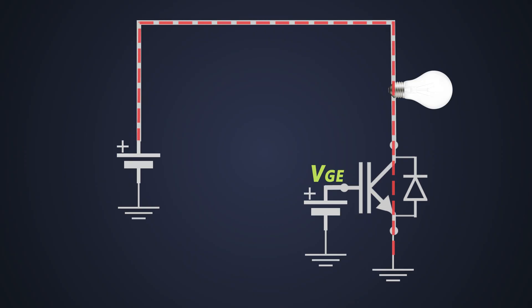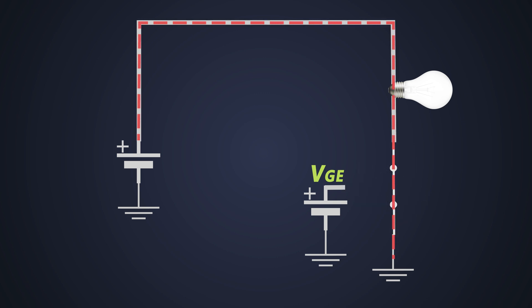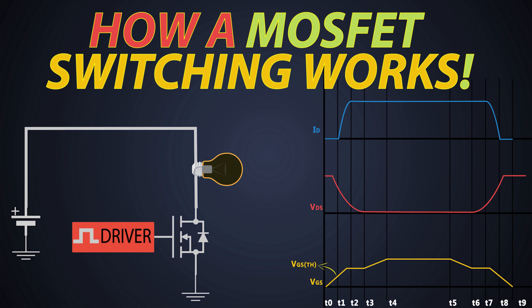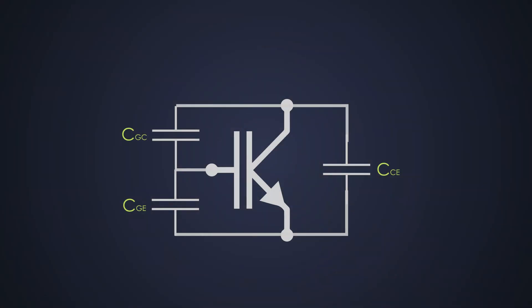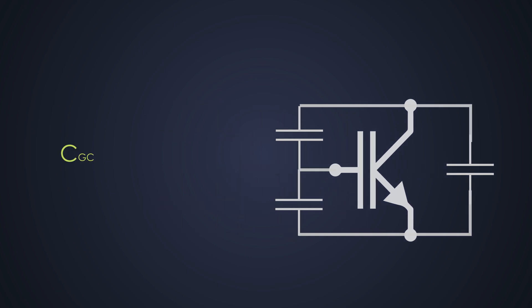We know that when we provide gate-emitter voltage, the IGBT turns on. The VCE decreases across the IGBT and current flows through it. The combination of these parasitic capacitors makes the different capacitance parameters. The addition of the gate-to-collector capacitor and gate-to-emitter capacitor makes the input capacitance. The addition of collector-to-emitter capacitor and gate-to-collector capacitor makes the output capacitance. And the gate-to-collector capacitor is the reverse transfer capacitance.